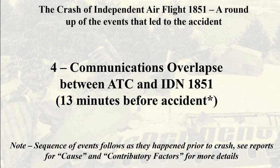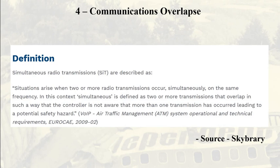Communications overlaps between ATC and Independent Air 1851. In aviation communications, an overlap can be described as a simultaneous radio transmission between two or more stations on the same frequency. In this context, simultaneous is defined as transmissions that overlap in such a way that the controller is not aware that more than one transmission has occurred, leading to a potential safety hazard.